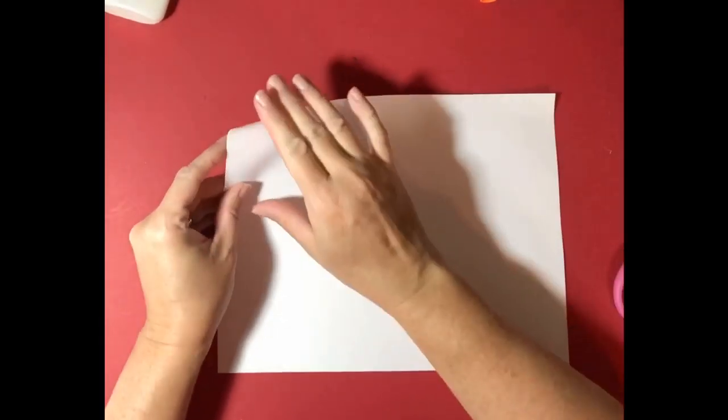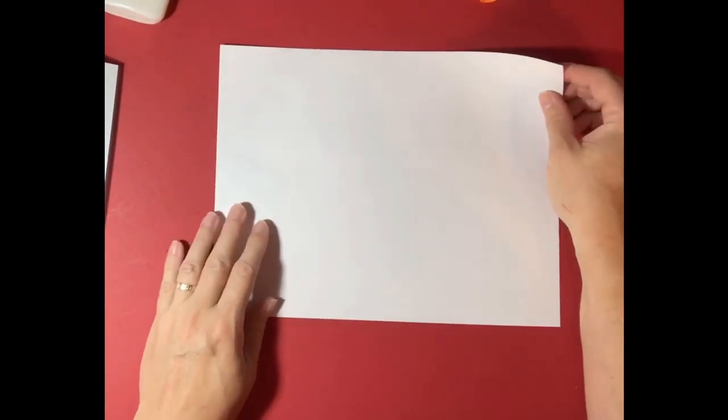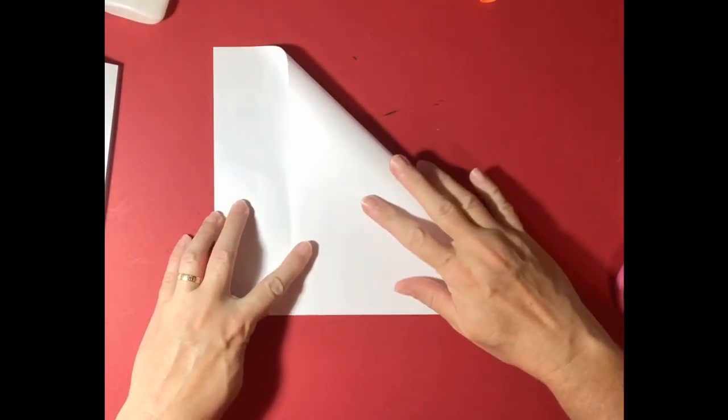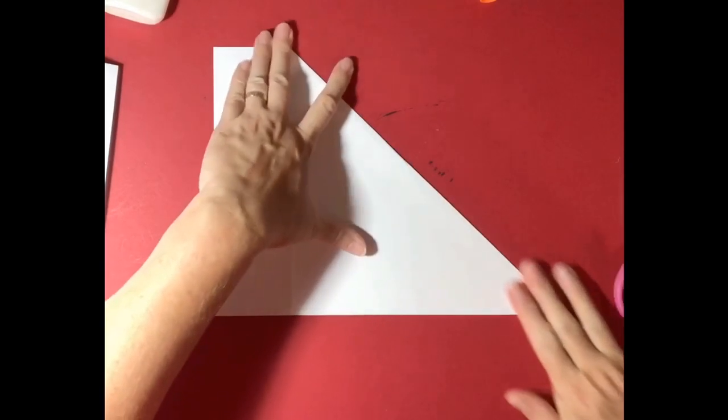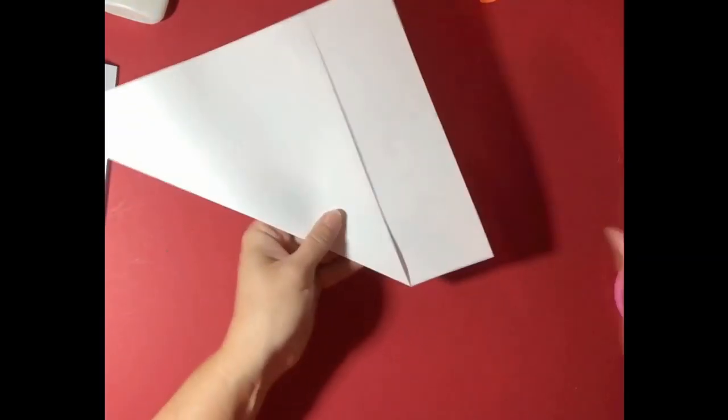Our first step is going to be taking one of our pieces of paper and we are going to do the square. So we're going to take the top corner, fold it down, and then this section right here is what we're going to cut off.